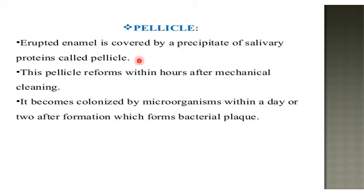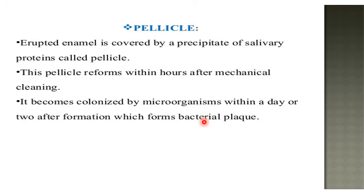Another surface structure is the enamel pellicle. When the erupted enamel is covered by precipitated salivary protein, this is called the pellicle. The protein comes from the saliva and attaches to the enamel surface. This pellicle forms within hours after mechanical cleaning and becomes colonized by microorganisms within a day or two, forming bacterial plaque. This plaque must be removed by brushing because if it remains on the tooth surface it may cause calculus, leading to destruction of the gingiva, gingival inflammation, and potentially progression to periodontitis.